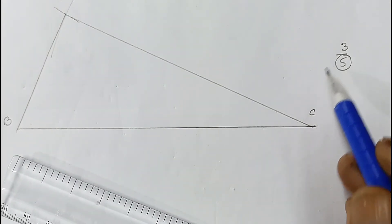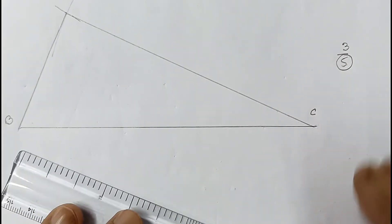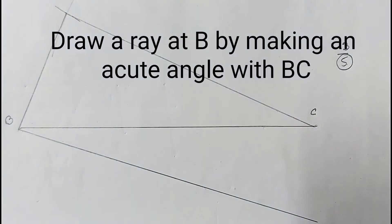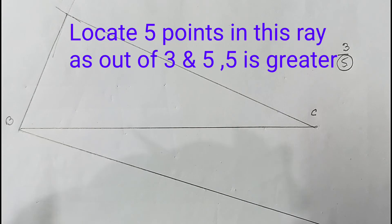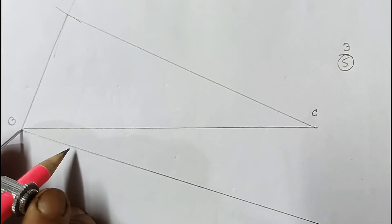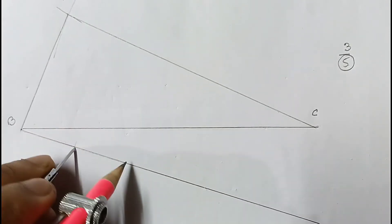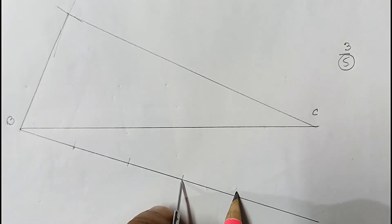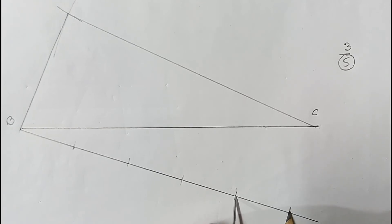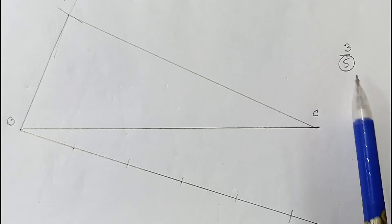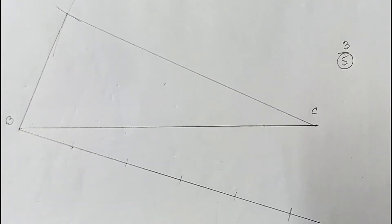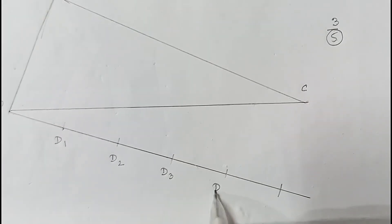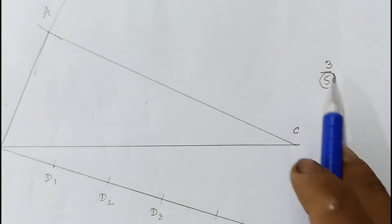Now we have to draw a triangle whose sides are 3/5 of the corresponding sides of triangle ABC. Out of 3 and 5, five is the bigger value, so from point B we draw one ray and locate five points on it — D1, D2, D3, D4, and D5.